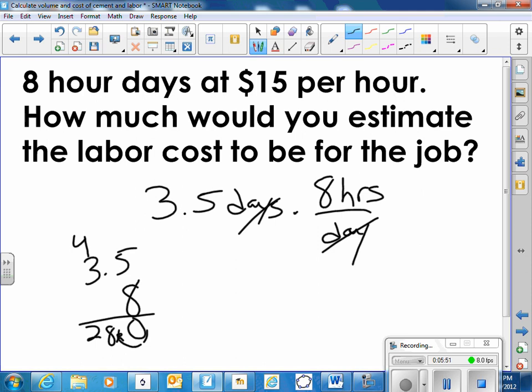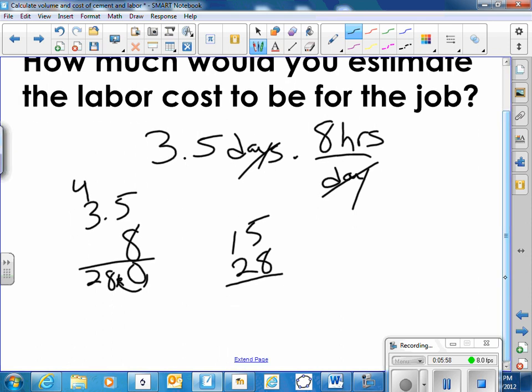And then I take my 28 hours. Let's multiply that by the $15. Eight times 5 is 40. Eight times 1 plus 4 is 12. Move over one place. Two times 5 is 10. Two times 1 is 2 plus 1 is 3. So 420.